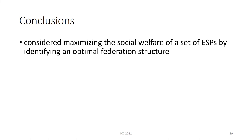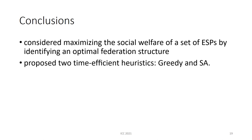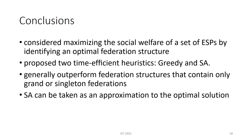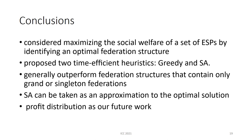In conclusion, we have considered maximizing the social welfare of a set of ESPs by identifying the optimal Federation structure. We proposed two time-efficient heuristics: greedy and simulated annealing. Our approach generally outperforms Federation structures containing only Grand or Singleton Federations. Simulated annealing can be taken as an approximation to the optimal solution. For future work, we should consider profit distribution among participants in the Federation. Thank you.